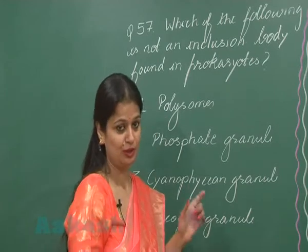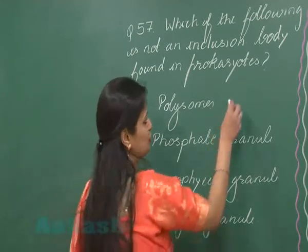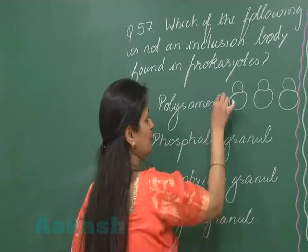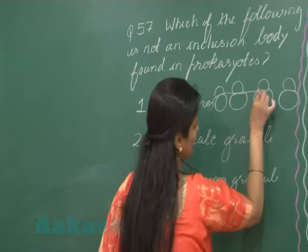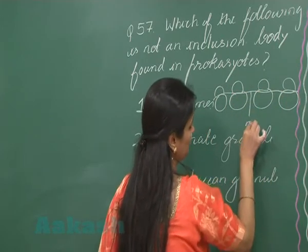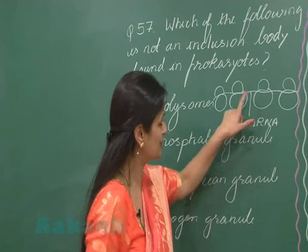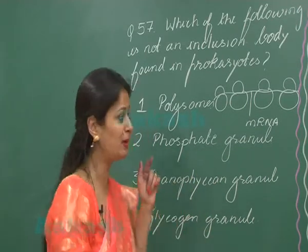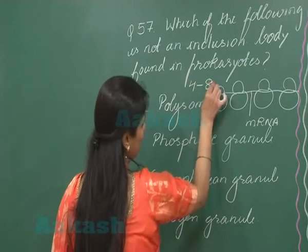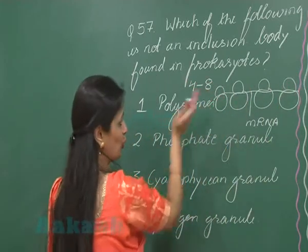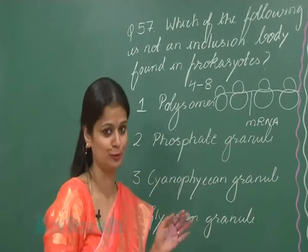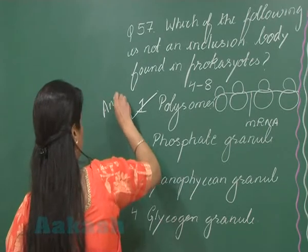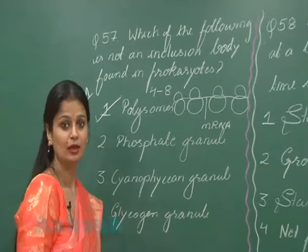Now, what are polysomes? In polysomes, a group of ribosomes are attached by a single strand of messenger RNA. Over the mRNA, several ribosomes are present — the number ranges from four to eight. This structure represents polysomes, also known as polyribosomes. So polysomes are not an inclusion body, making the right answer option number 1.